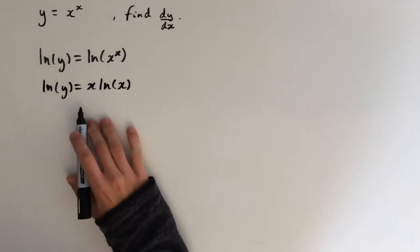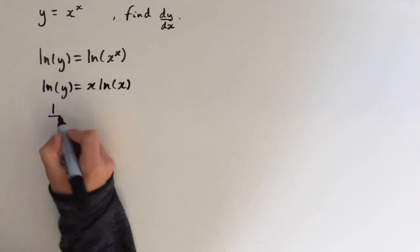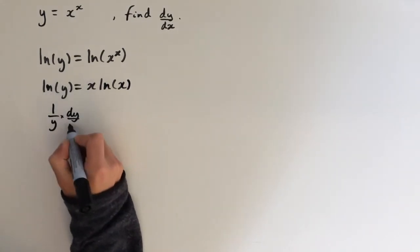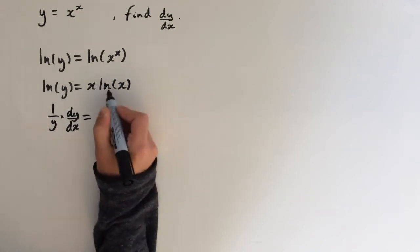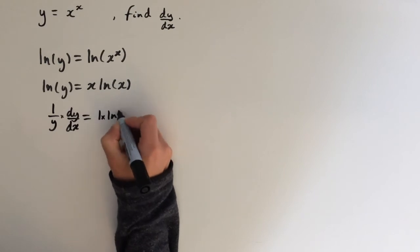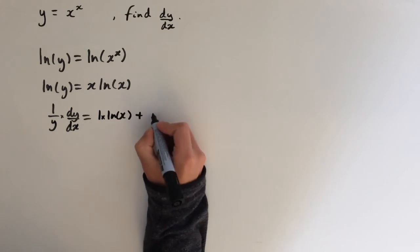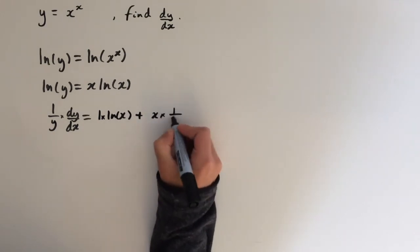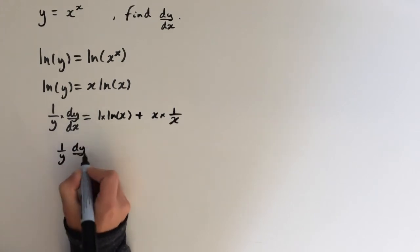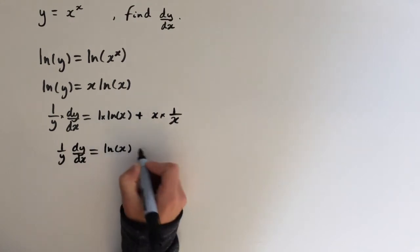And now we can implicitly differentiate it with respect to x. So the derivative of ln of y will be 1 over y times dy/dx. And then we have to use the product rule here. So the derivative of x is just 1, so 1 times ln of x, plus the derivative of ln of x which is 1 over x, so x times 1 over x. So 1 over y times dy/dx equals ln of x plus 1.